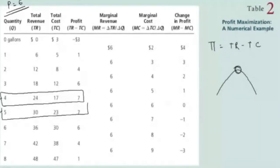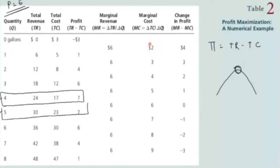So your profit function first increases and then starts falling. As a firm that wants to maximize profit, you would want to produce at the point where profit is highest. From this table you can see that producing either four or five units gives maximum profit of seven dollars. Now let's understand why this particular point gives maximum profit and what the meaning is behind it — we'll move on to the marginal revenue and marginal cost columns.